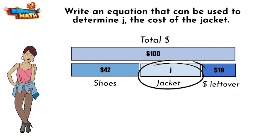To find this unknown, we simply subtract the cost of the shoes and the leftover money from her total. So the equation Josie can use to determine how much the jacket cost is 100 minus 42 minus 19 equals j.